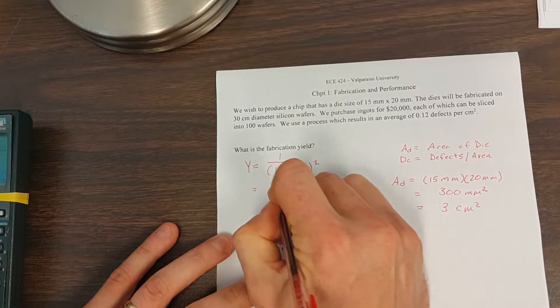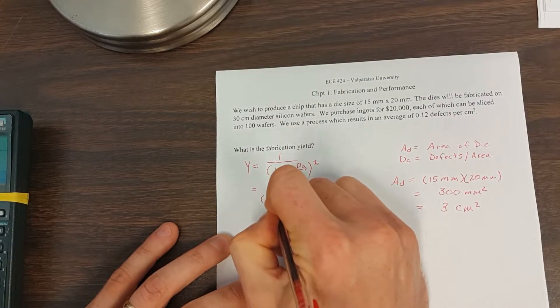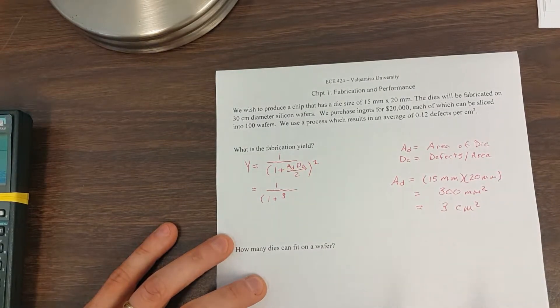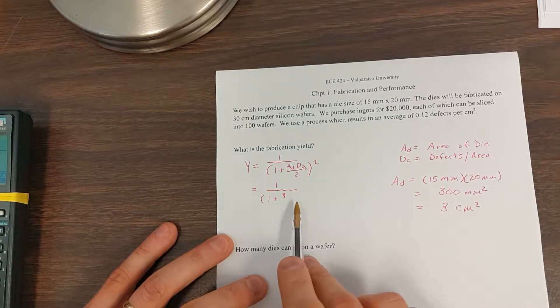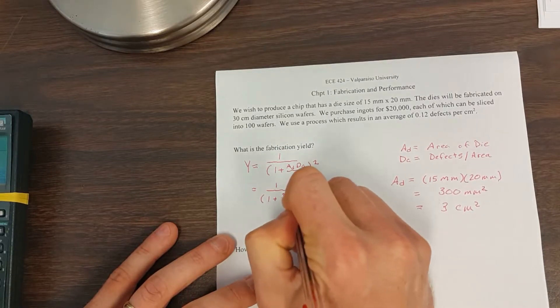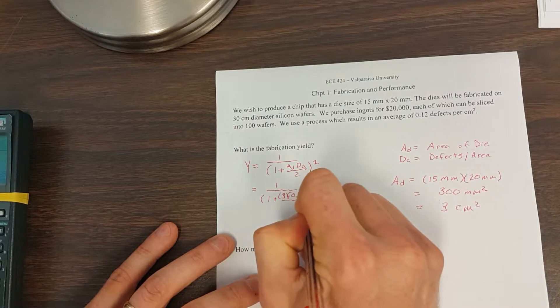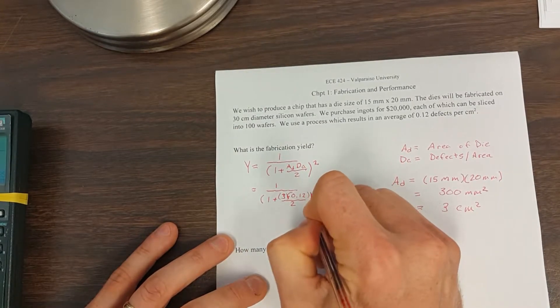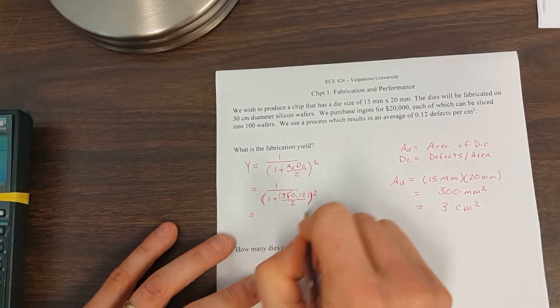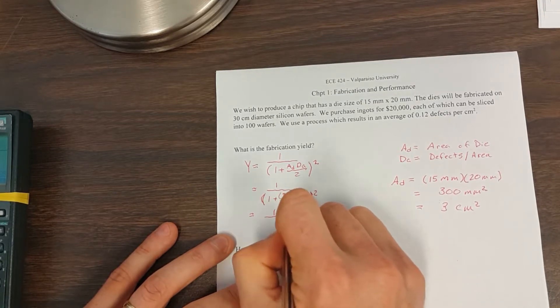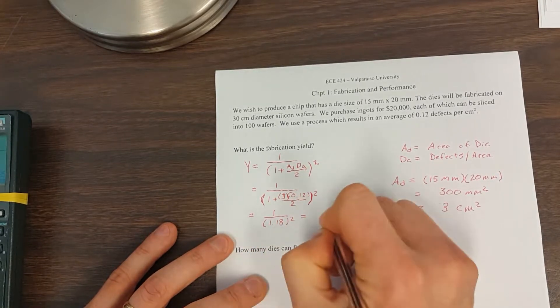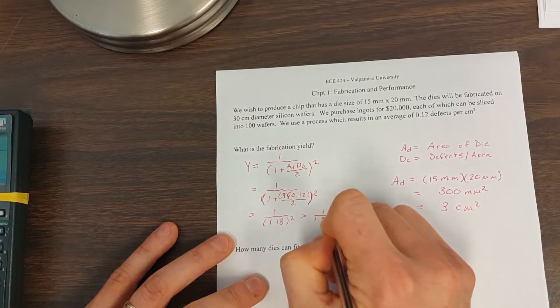With the yield then, we're going to have 1 over the quantity 1 plus, we're going to plug these two things in, we've got 3, now I'm going to leave the units out because I was really careful, just because on this video it's going to be hard to see. So I've got 3 times 0.12, and that is going to be over 2. And always remember, this whole quantity is going to be squared. So that then, when we work this out, is going to be 1 over 1.18 squared, which is equal to 1 over 1.392.